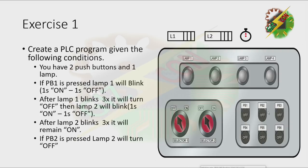Exercise 1: Create a PLC program given the following conditions. You have 2 push buttons and 1 lamp. If PB1 is pressed, lamp 1 will blink 1 second on, 1 second off. After lamp 1 blinks 3 times, it will turn off. Then lamp 2 will blink 1 second on, 1 second off. After lamp 2 blinks 3 times, it will remain on. If PB2 is pressed, lamp 2 will turn off.